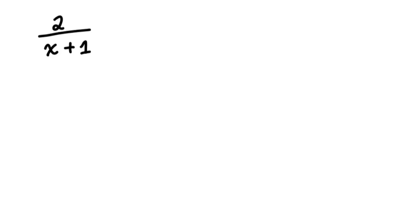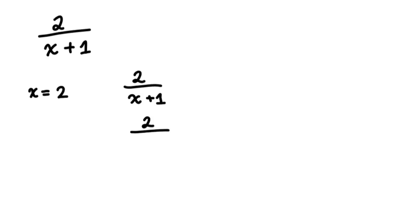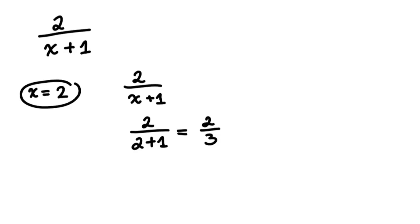Say I want to evaluate this expression for x equals 2. If I substitute 2 for x, then x plus 1 becomes 2 plus 1, and I get 2 over 3. So when x is equal to 2, the output value — the evaluated value of the expression — will be 2 over 3.